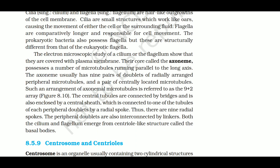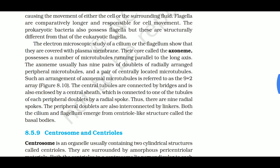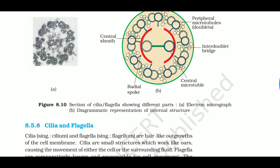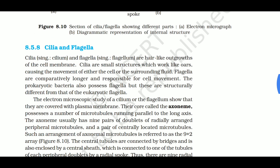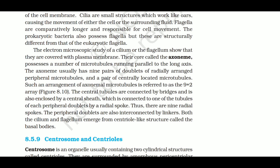The central tubules are connected by bridges and enclosed by a central sheath. They are connected to one of the tubules of each peripheral doublet by radial spokes. There are nine radial spokes - one from each doublet. The peripheral doublets are also interconnected by a linker.